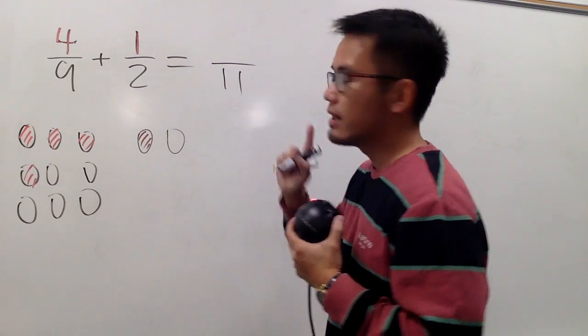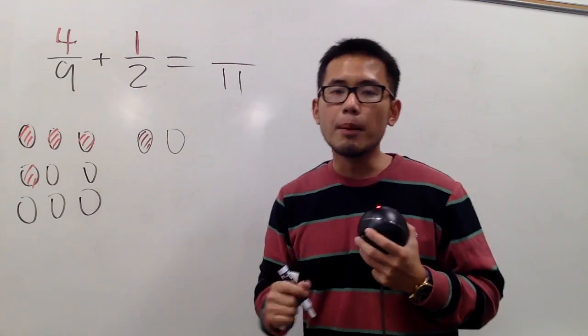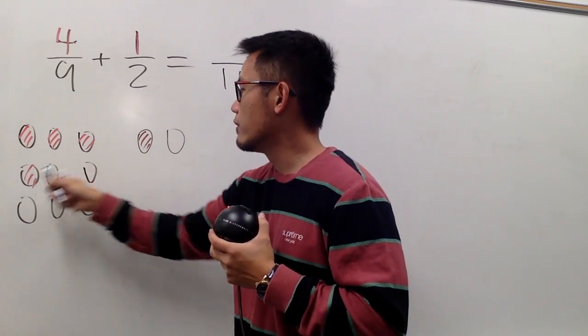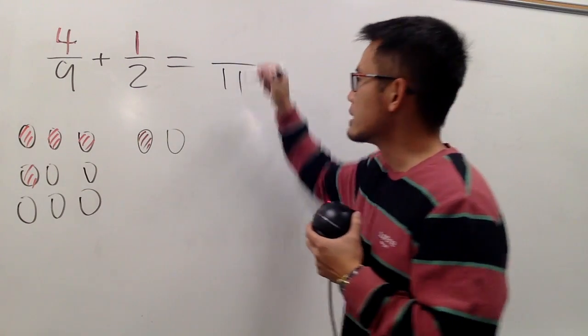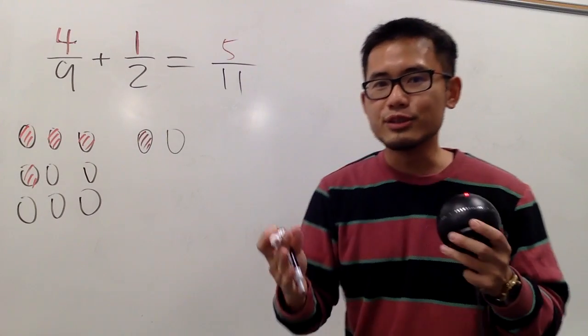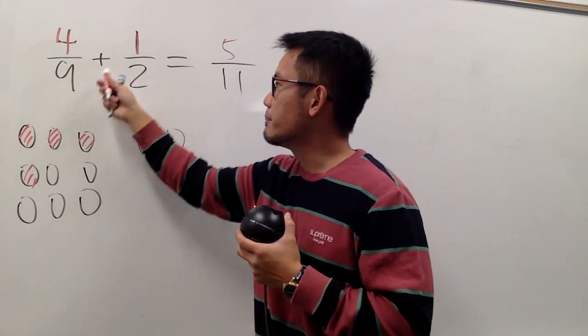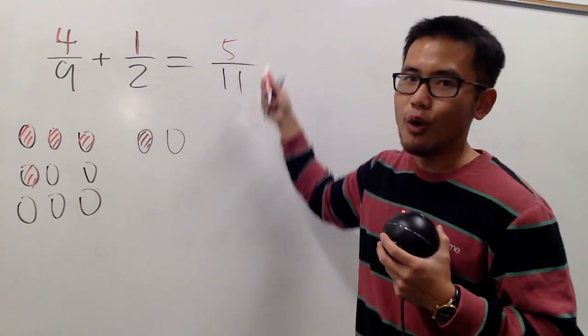So, that's the total 11 on the denominator. And now, how many are we taking? Look, 1, 2, 3, 4, 5. So, on the top, it's equal to 5. And I just showed you that 4 over 9 plus 1 over 2 is equal to 5 over 11. Check this out.